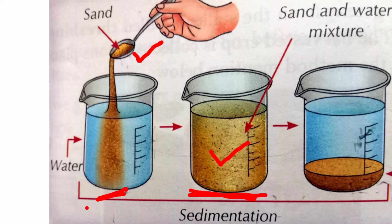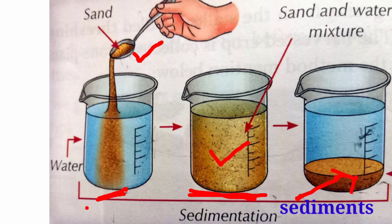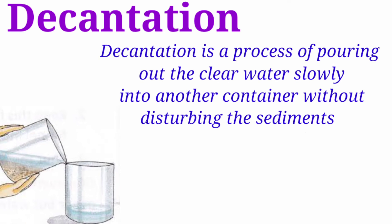In the second picture, this is a mixture of sand and water. If we keep it undisturbed for some time, the heavier particles settle down at the bottom — as seen in this picture. This settled part is known as sediment, and this process is known as sedimentation.